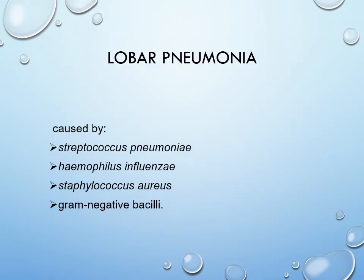The causative agents are different for lobar pneumonia and for atypical pneumonia. Lobar or typical pneumonia is caused mainly by Streptococcus pneumoniae, Haemophilus influenzae, Staphylococcus aureus, and gram-negative bacilli. There can be many gram-negative bacilli which can cause this pneumonia.